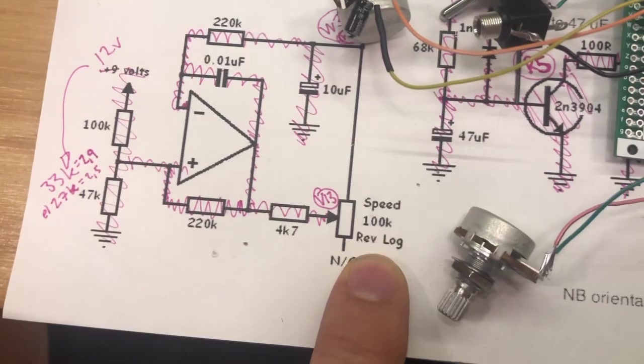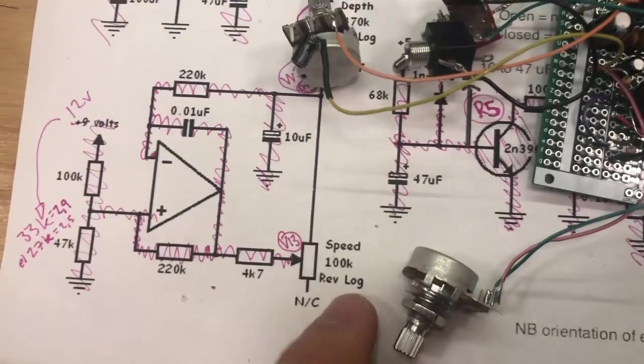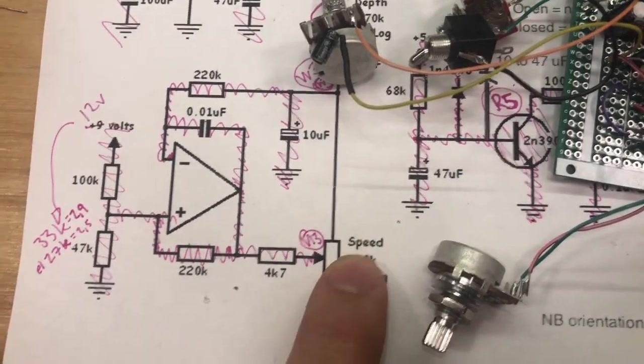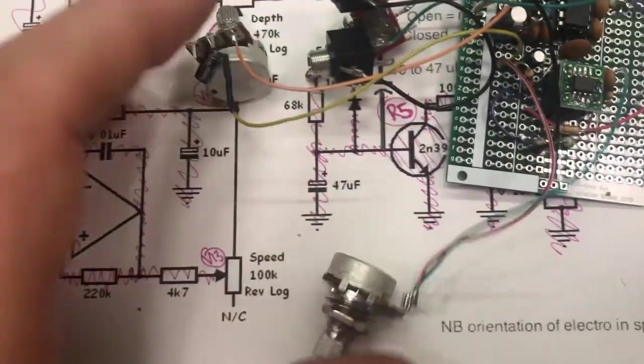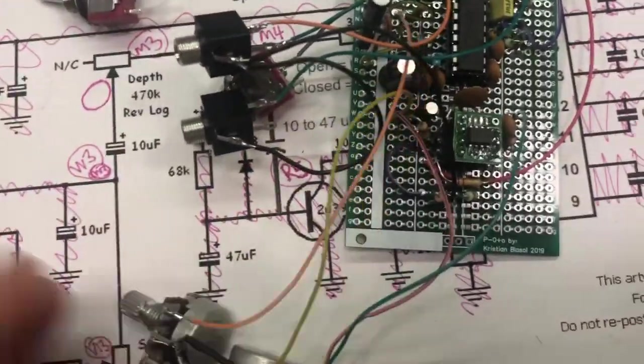This is 100k reverse logarithmic, I don't have that either. This is a normal logarithmic and that's the speed. Both of these are really sensitive at this moment.